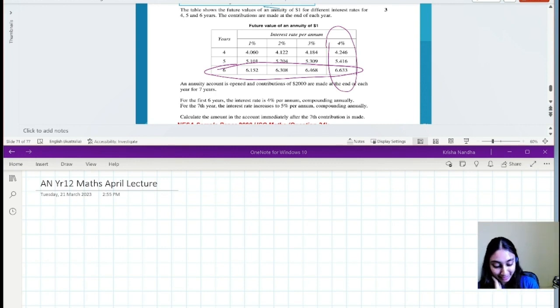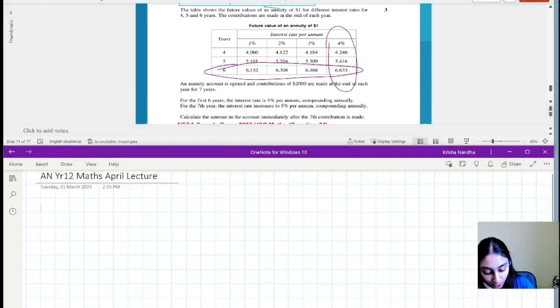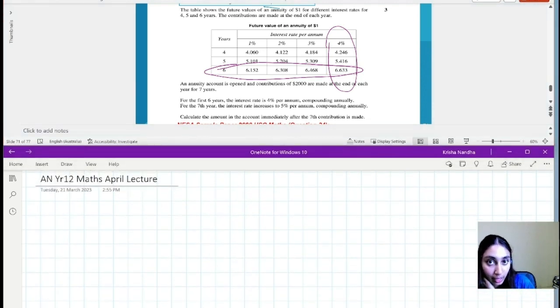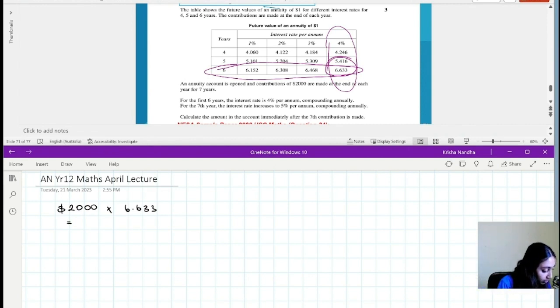What you need to do is take a look at the principal amount, how much you are contributing. In this case, we're contributing $2,000 each year, and we're just going to times it by this amount, so times 6.633, which will be equal to $13,226. So that's how much money you have in the first six years.